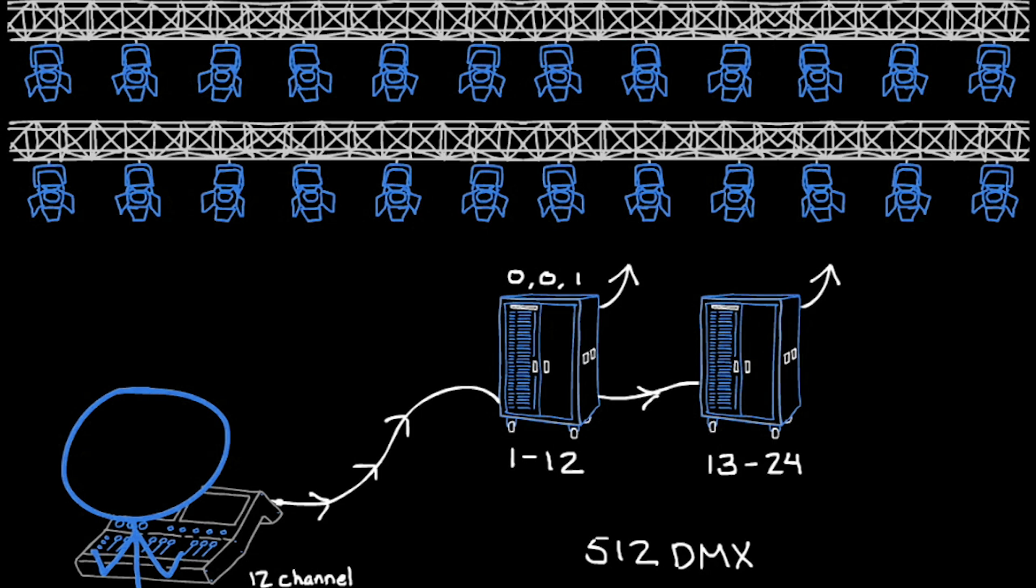We only have a 12-channel console because they couldn't afford a 24-channel console to talk to all 24 dimmers. They have 24 lamps, 24 dimmers, and a 12-channel console, which one would think is a problem, but it isn't. DMX can make this dimmer exactly the same as that one by addressing it to 001. Therefore, it mimics this dimmer here.